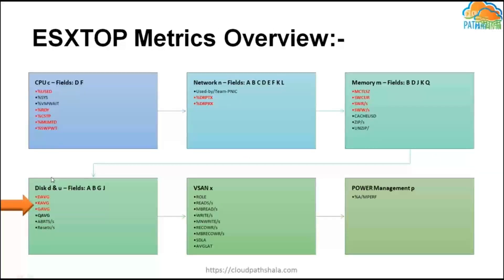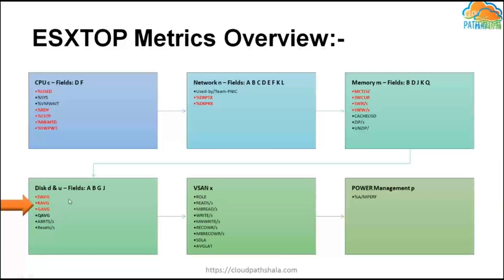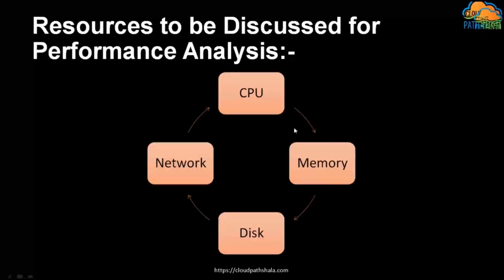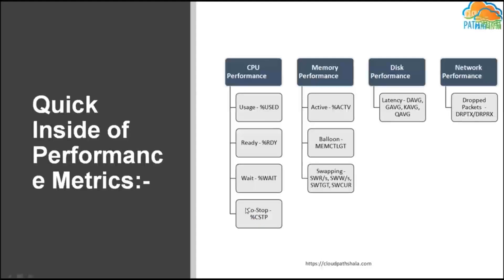Here is the ESXtop metrics overview. These are the counters we're going to talk about when you press D for disk in ESXtop. We'll be talking about DAVG, KAVG, and GAVG — those are the key components. We'll do a deep dive into CPU, memory, disk, and network, but let's focus on disk here.